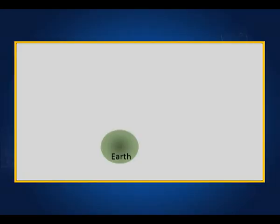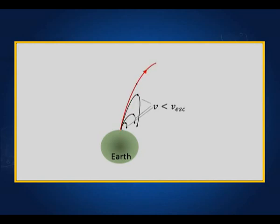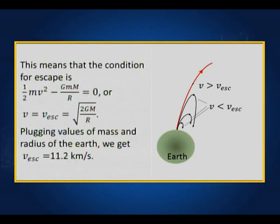It is a huge velocity, but it depends upon the mass and radius of the earth or any other planet. The animation shows a particle coming back when its velocity is less than the escape velocity. When the velocity is beyond the escape velocity the particle escapes. For velocity less than the escape velocity it comes back; for velocity greater than the escape velocity it escapes. The escape velocity is 11.2 kilometers per second.